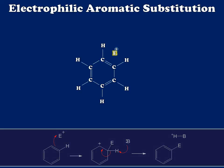Hey everybody, it's Professor Davis here from ChemSurvival.com and the YouTube channel ChemSurvival. I'm going to talk to you a little bit today about electrophilic aromatic substitution. As an introduction, we're just going to use the simplest aromatic we can make, which is benzene, and we're going to have that reacting with a generic electrophile, which I've just labeled as E in this example.